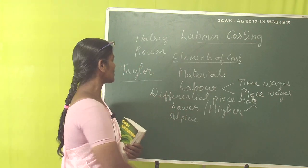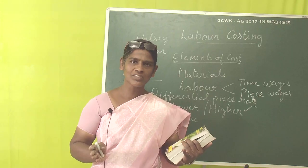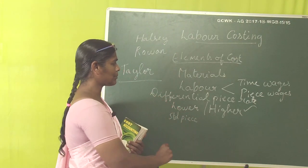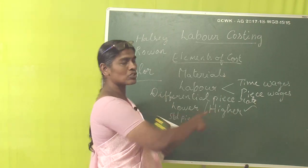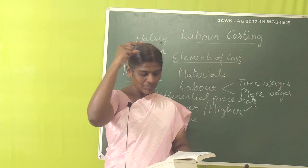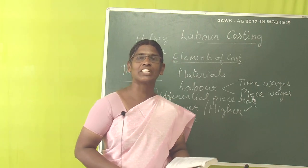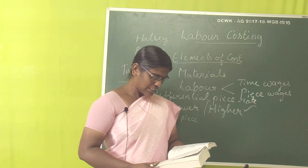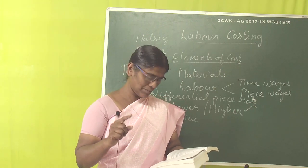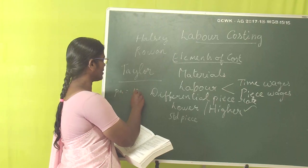Today we are going to study Taylor's Differential Piece Rate System. Under this system, we calculate the performance of workers and divide them into two categories: below standard and above standard. Below standard workers get the standard piece rate; above standard workers get the higher piece rate. Let me read the problem: Calculate the earnings of workers X and Y under Taylor's Differential Piece Rate System.